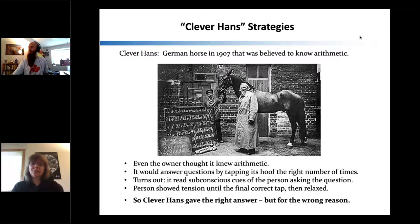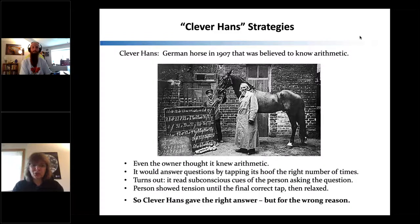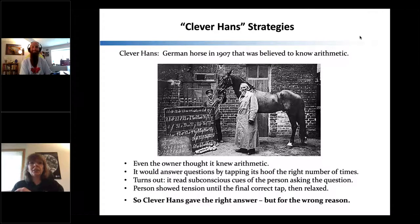It turned out that even when other people asked the horse questions, the horse got it right too. It took a group of scientists to analyze what cue the horse was using. Most people, when they ask a question like this, tense up while the horse is tapping, and once the horse reaches the right number, they relax. That's what the horse was using as a cue, even for people it didn't know.